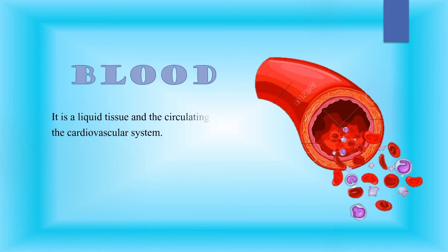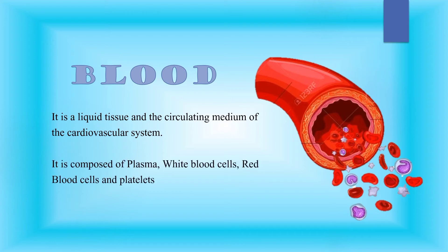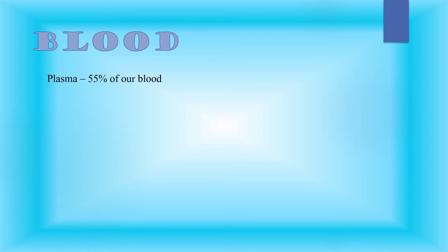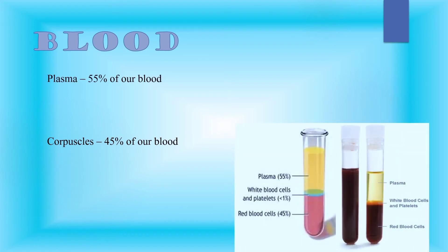The blood is a liquid tissue and the circulating medium of the cardiovascular system. Blood comprises 8% of the human body weight, and an average adult has about 5 liters of blood. It is composed of plasma, white blood cells, red blood cells, and platelets. Blood consists of plasma, which is 55% of our blood, and corpuscles, which is 45% of our blood. Plasma consists of 92% water and 8% blood proteins.